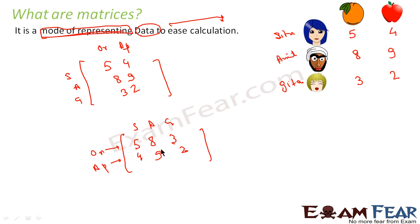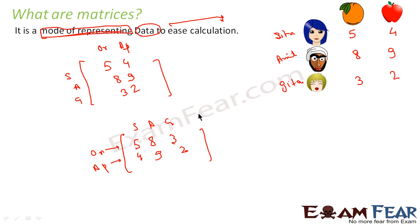So what I have done is represented this data into two forms. This form is nothing but called a matrix — you just represented this data in this kind of fashion. It is nothing but a mode of representing data. So here the data — Sita had five oranges and four apples, Amit had eight oranges and nine apples, Gita had three oranges and two apples — is represented in matrix fashion.